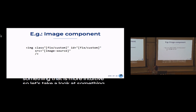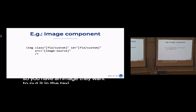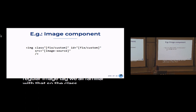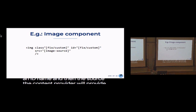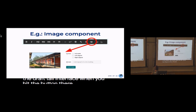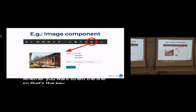Let's look at an example: the image component. When someone wants to put an image in the content, we have a regular image tag. The class could be something like 'image-fluid' that we don't want anyone to change, or we can provide an option for people to enter a class name or ID. This is from the Draftail interface — when you hit the button, the formatting panel comes out, you can left-align, and you have the alt text field. That's out-of-the-box Wagtail.